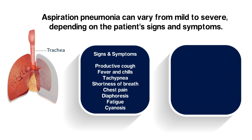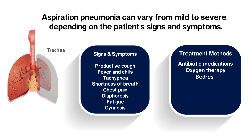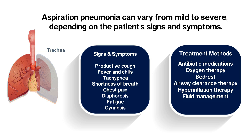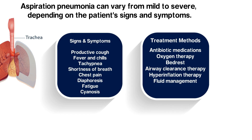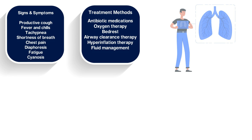Pneumonia in general should be treated on a case-by-case basis. Some of the most common treatment methods include antibiotic medications, oxygen therapy, bed rest, airway clearance therapy, hyperinflation therapy, and fluid management. Each patient may require different treatment modalities depending on their signs and symptoms. In severe cases, intubation and mechanical ventilation may be indicated.